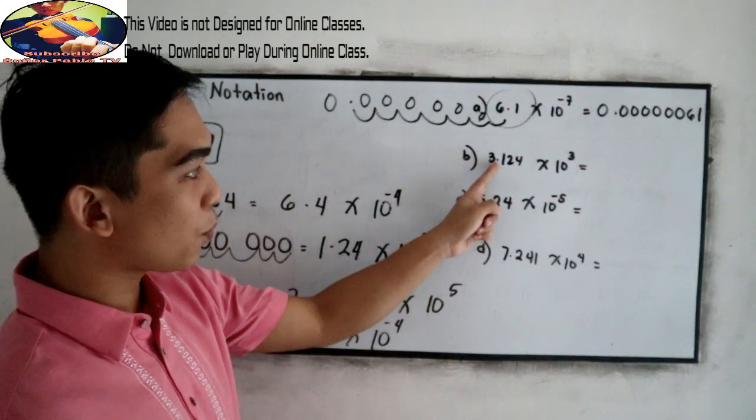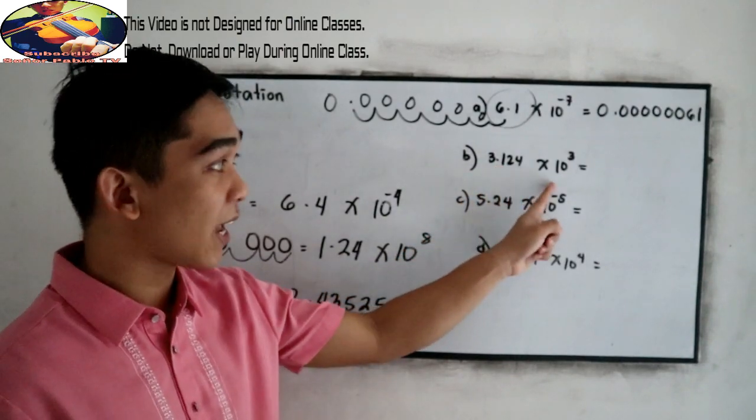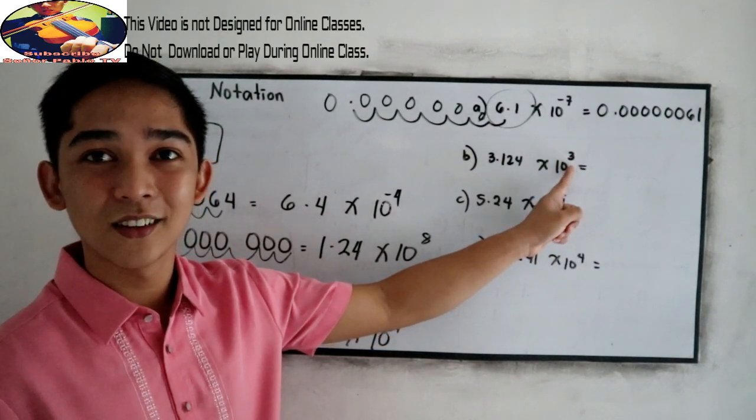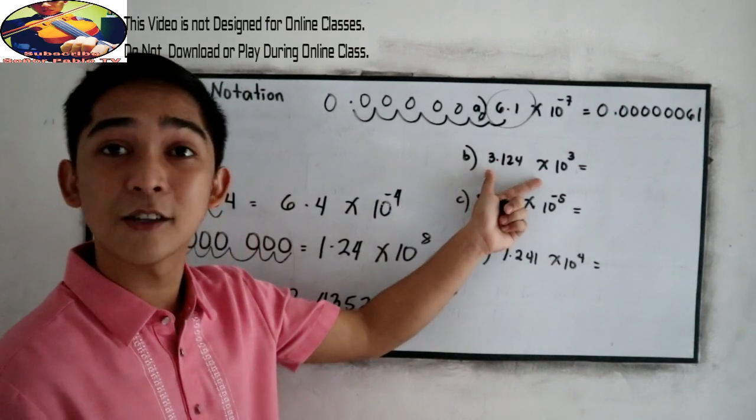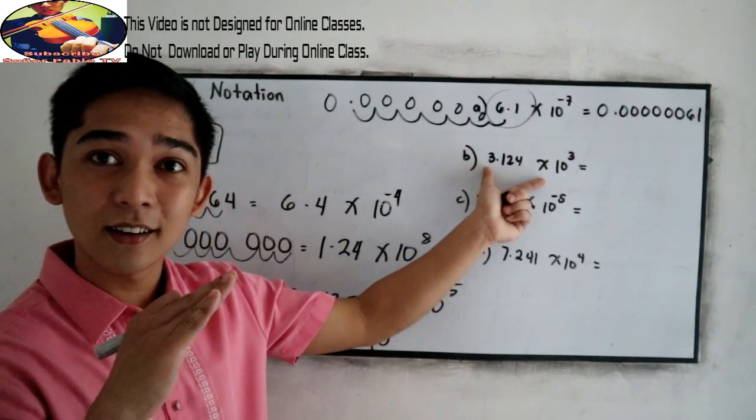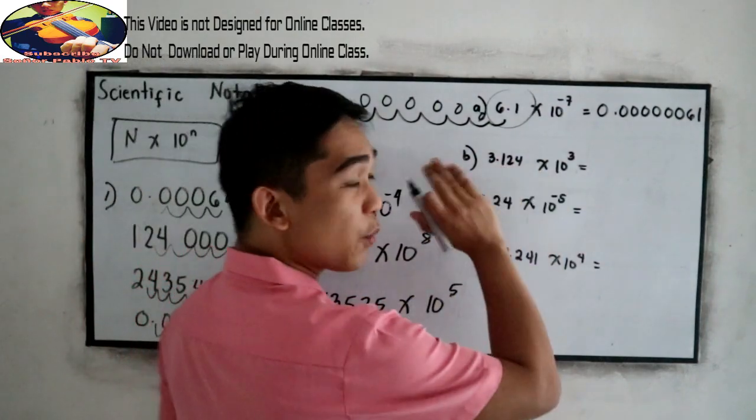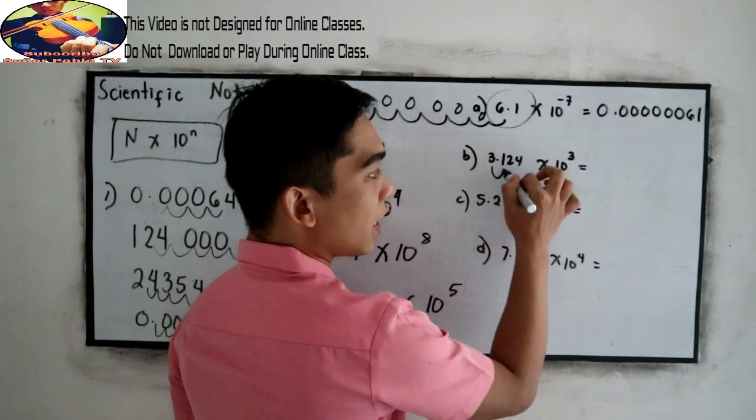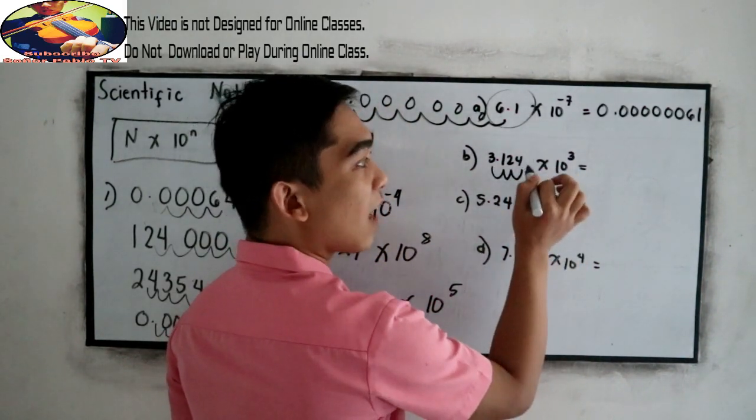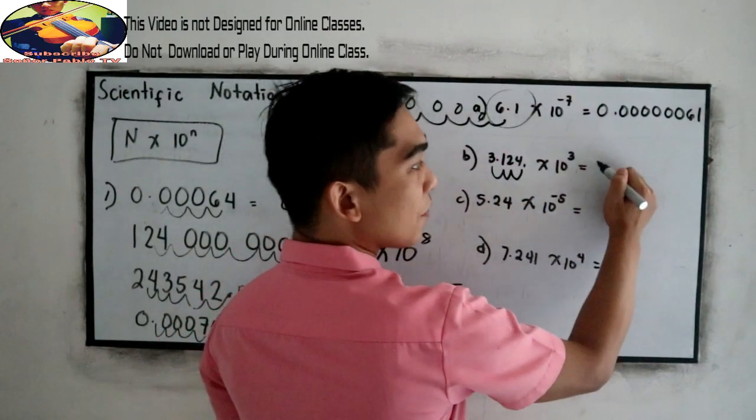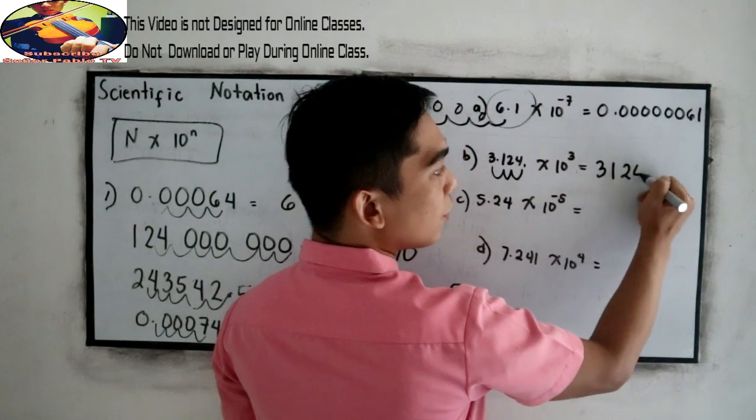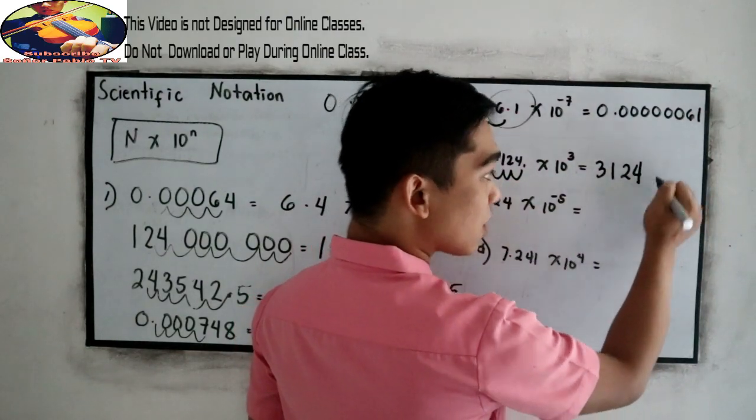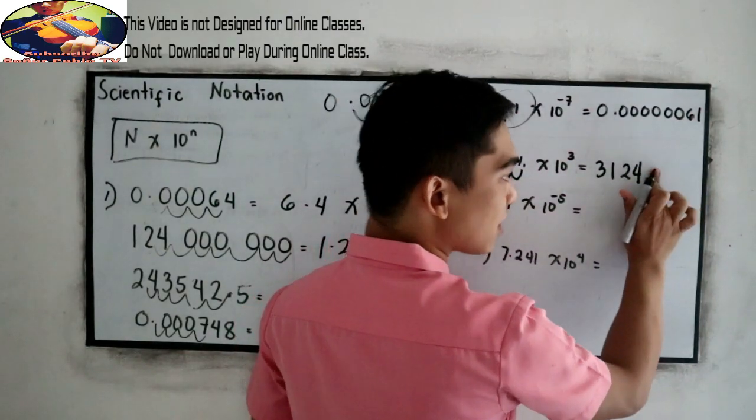Next, 3.124 times 10 raised to 3. Positive 3. That means in writing decimal, given this problem, this will give us a big value. So we're going to move our decimal point to the right 3 times: 1, 2, 3. Then our decimal will be here. So the equivalent is 3124. It is understood that our decimal point is located here. So it's okay not to write our decimal point.